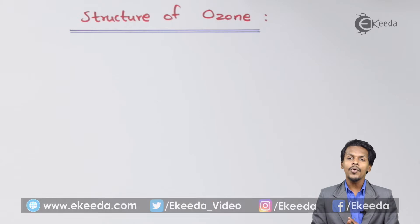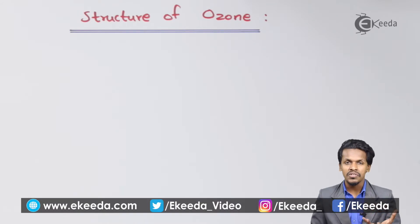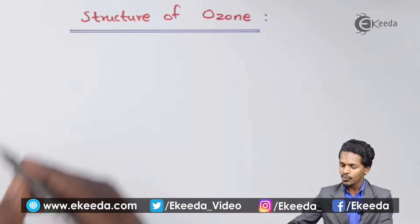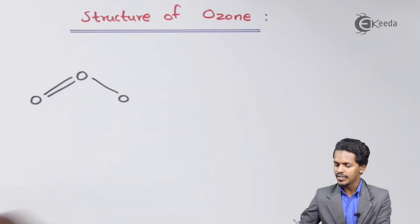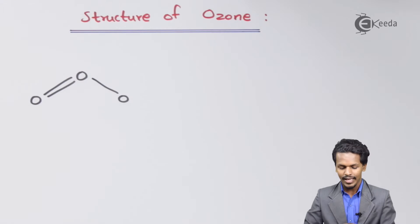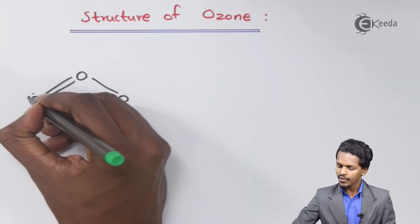So friends, talking about ozone, ozone is having an angular structure and for that I could write the structure over here. So this is the ozone structure which consists of, this oxygen consists of, basically I would write it over here as two lone pair of electrons.